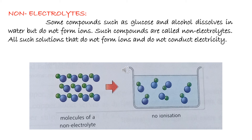There are also compounds that are neither strong nor weak electrolytes — we call them non-electrolytes. Examples include glucose and alcohol. When dissolved in water, they do dissolve but do not form ions at all. As you can see in the diagram, no ionization occurs, so they do not conduct electricity.